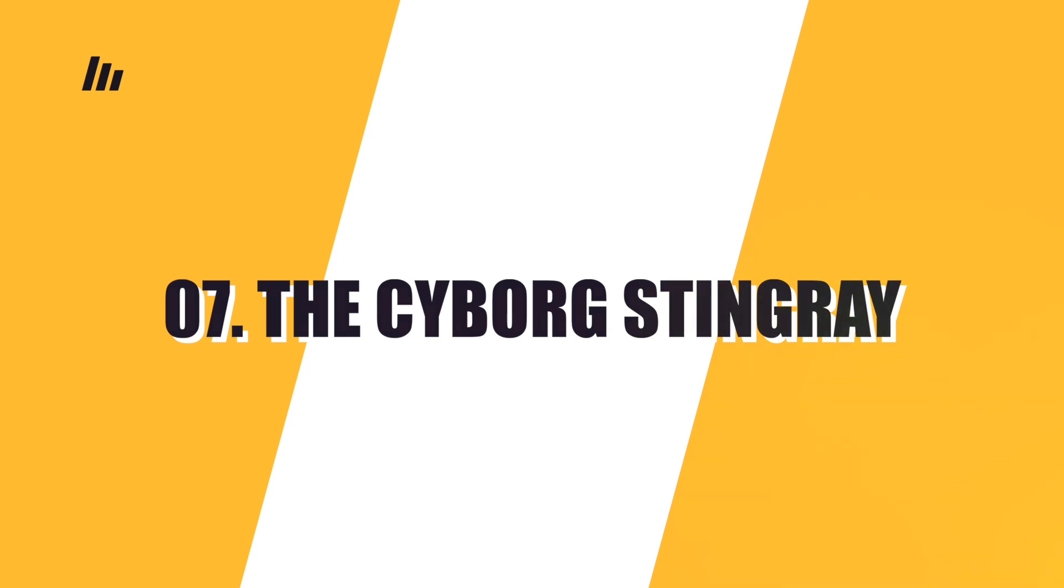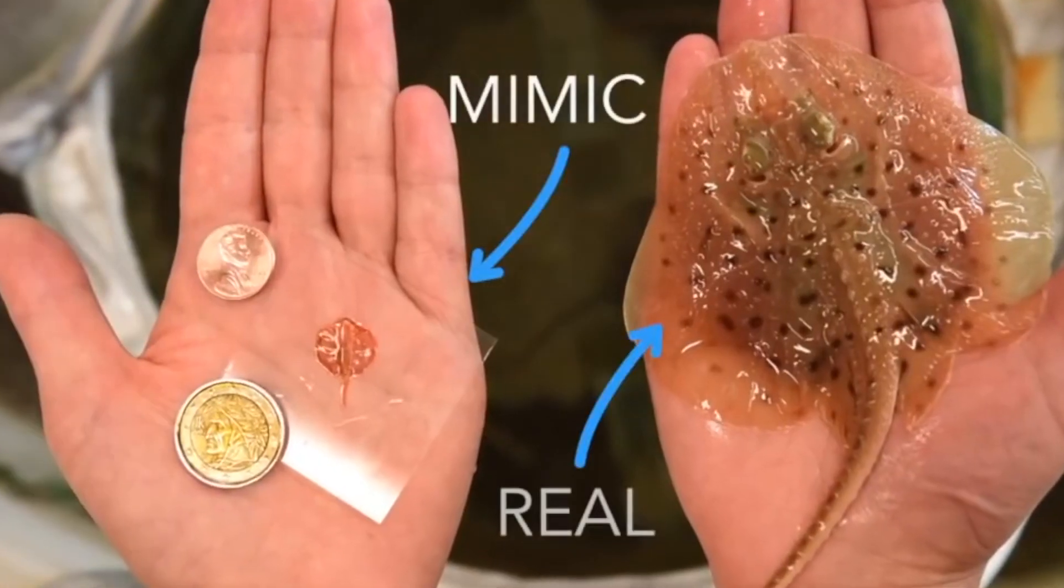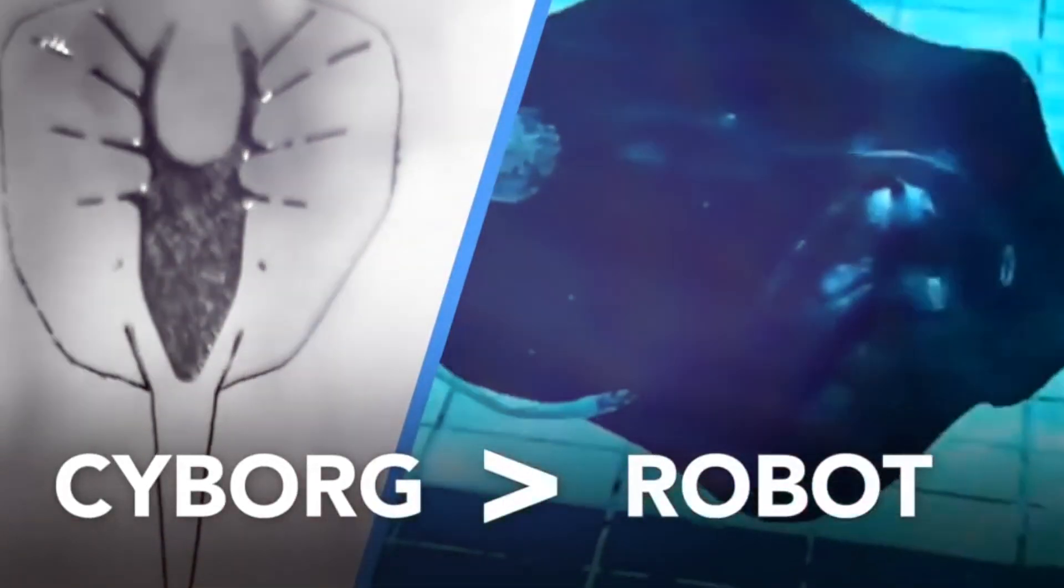Number 7: The Cyborg Stingray. These stingrays aren't exactly robots. Built from both man-made and biological components, they are in fact cyborgs in every sense of the word. The research team used a neutrally charged gold framework covered with a thin polymer film.